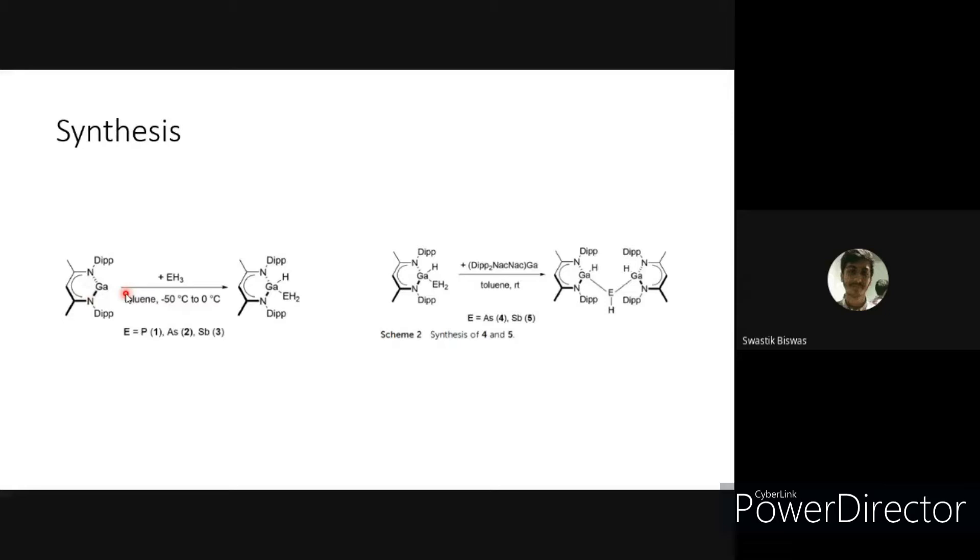Here, they did a direct reaction of stibane dissolved in low-valent gallium species. Here it is Dipp nacnac gallium at cold temperature of minus 60 to 0 degrees Celsius to form primary and secondary stibanes gallium. Similar reaction protocol was followed to form arsenic. Low temperature was maintained as these gases were highly toxic and combustible.